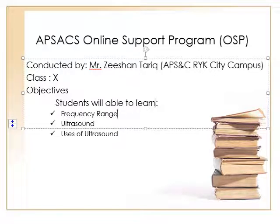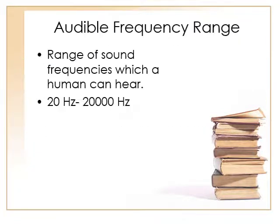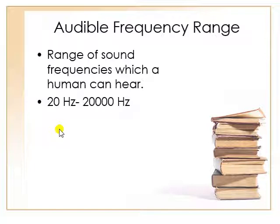First of all, audible frequency range. Audible frequency range is the number of frequencies, or range of frequencies, or you can say a block of frequencies under which a human ear can listen. This range is from 20 hertz to 20,000 hertz. If a sound has a frequency of 20 hertz, it can be heard by the human ear, and if any sound has a frequency of 20,000 hertz, it will also be heard by humans.